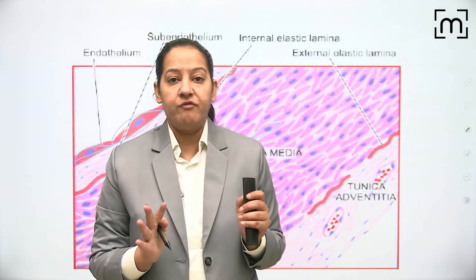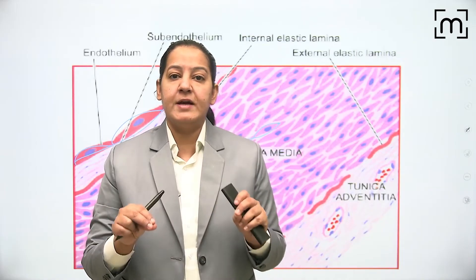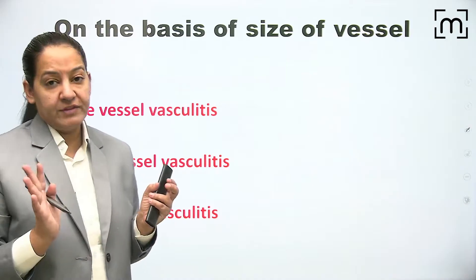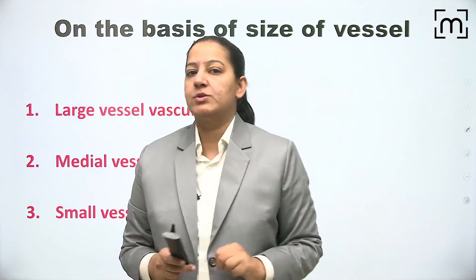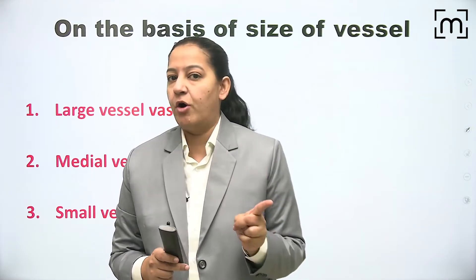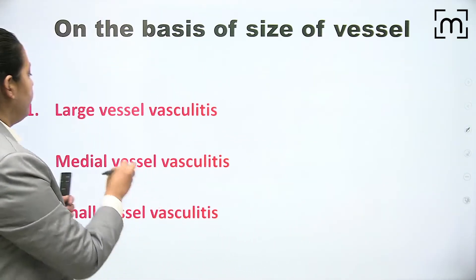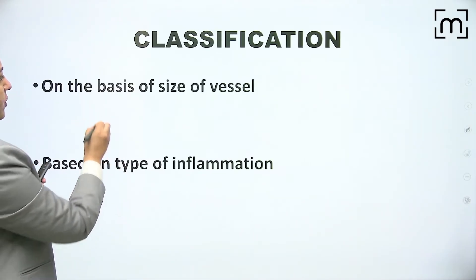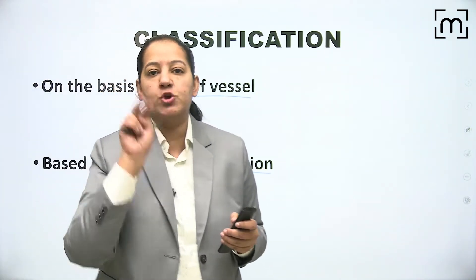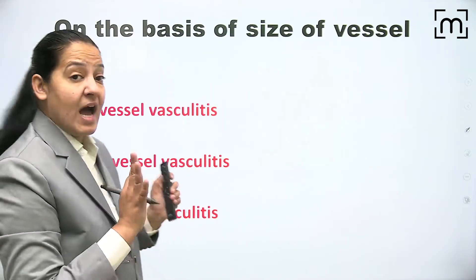This is the structure of the wall of a blood vessel. Before understanding inflammation in the wall, you must understand its structure. Now coming to the classification of vasculitis - we can classify vasculitis by two ways: first, based on the size of the blood vessel involved, whether large, medium, or small; and second, based on the type of inflammation.